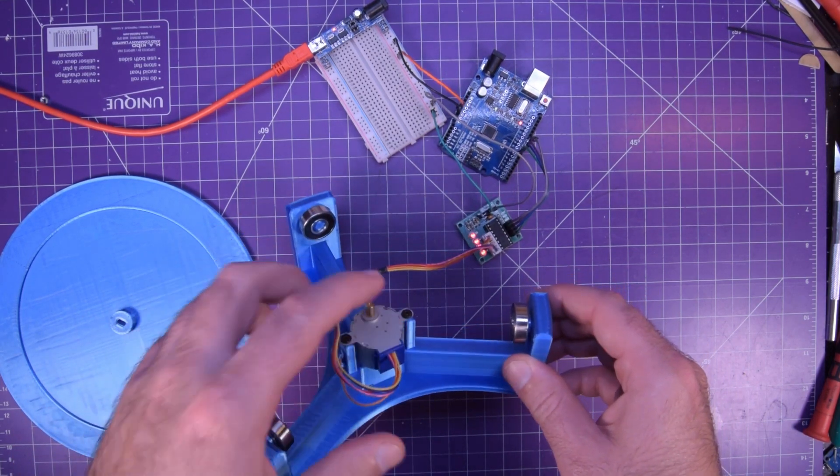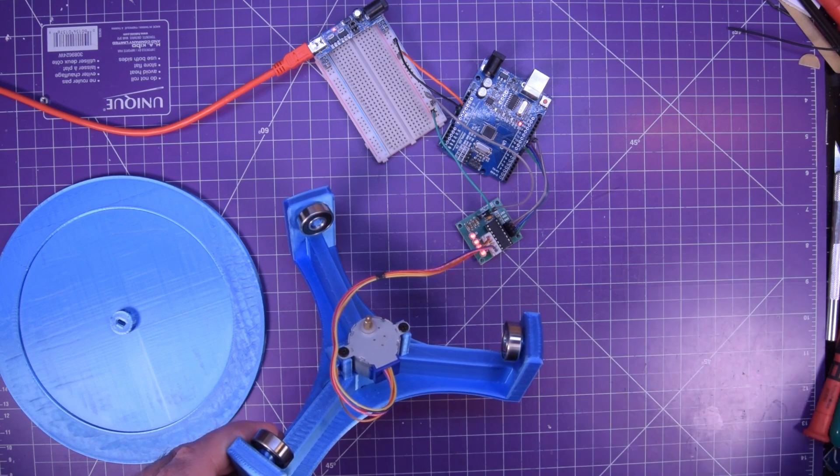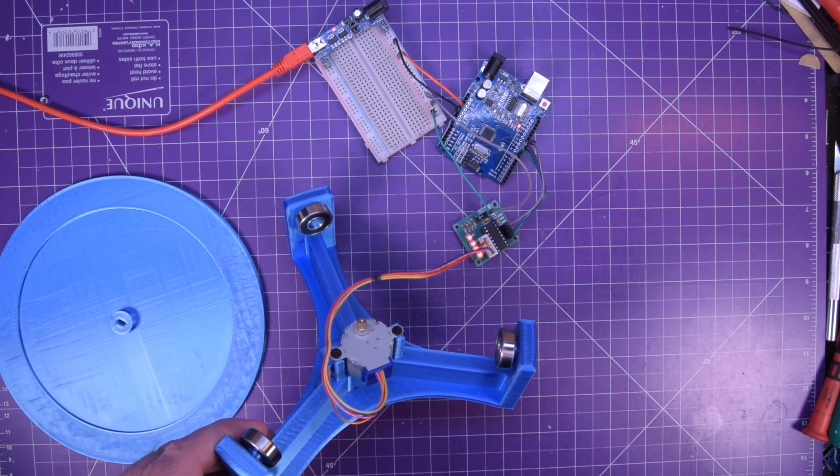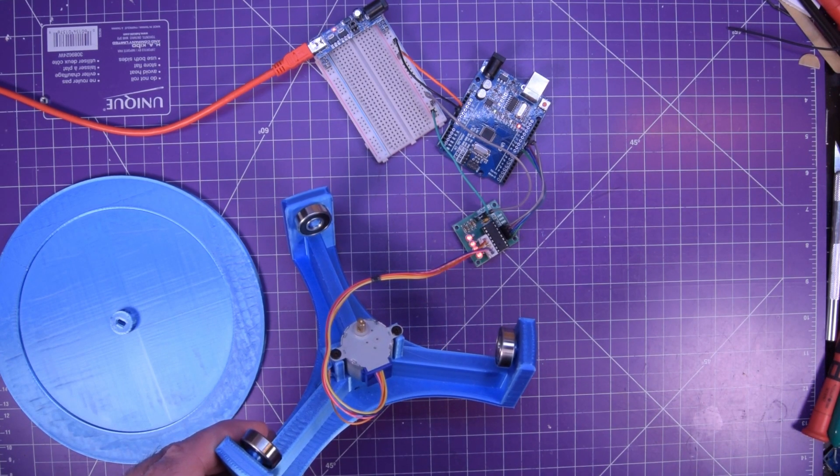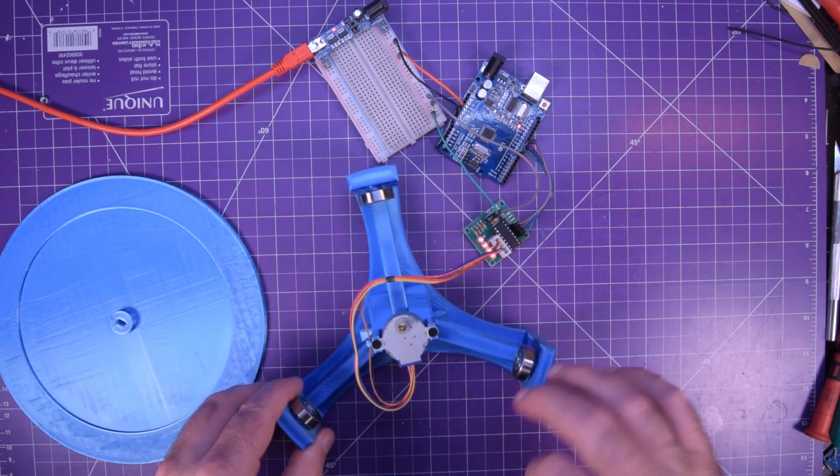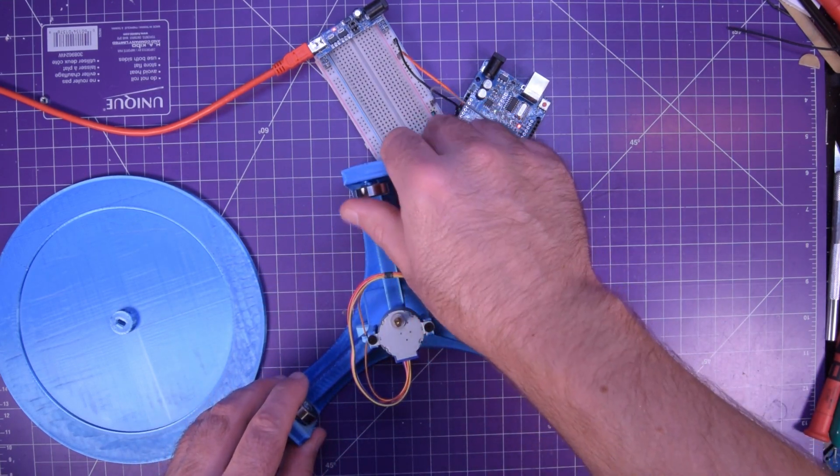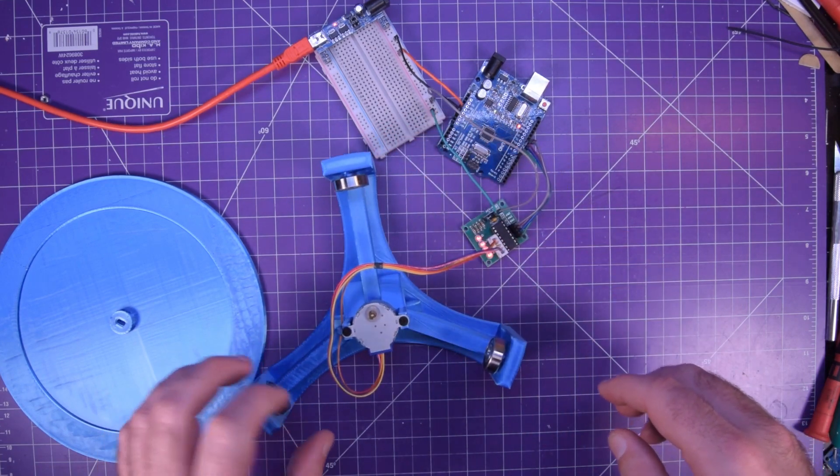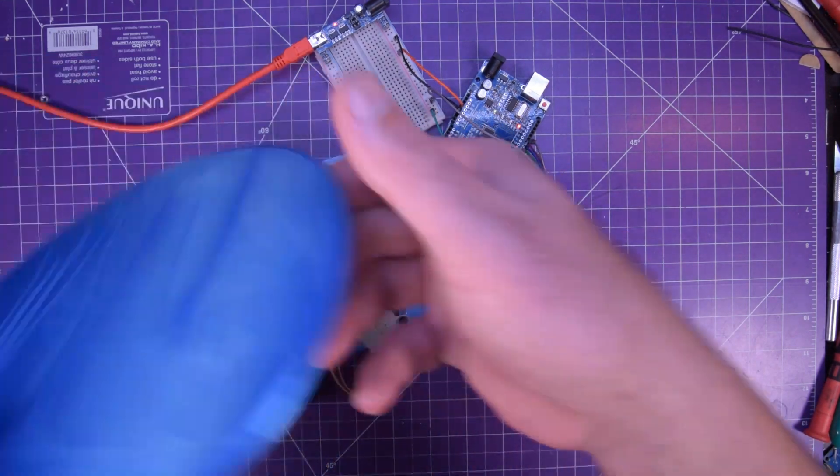It's got one of these stepper motors that I've done recent videos on. That would be the 28BYJ-48. These are 5-volt variants of that. And it's got these 608, basically skateboard bearings. And it's just a turntable.